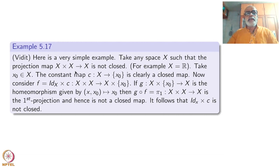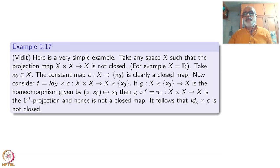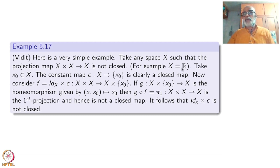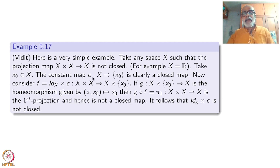Take any space X such that the projection map is not closed. For example, take X equal to R: the projection map from R cross R to R is not closed. Now take any point X-naught inside X. The constant map from X to X-naught is clearly a closed map — the constant map is always a closed map.